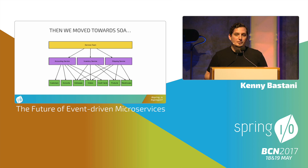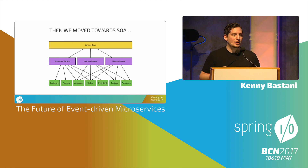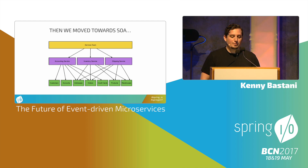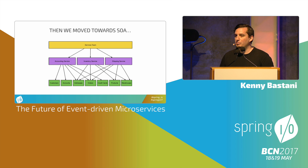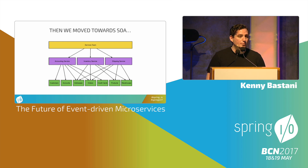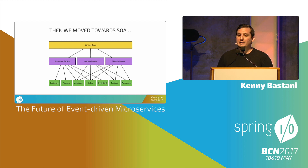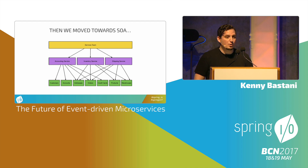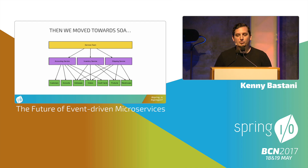Then we moved towards SOA and got a little better. We split out the deployment pipeline to three separate components: an accounting service, an inventory service, and a shipping service — each releasable independently. But the key problem is that now we're sharing libraries. At the bottom, I have my domain language — the objects these services exchange to implement features. If I change the address object, now I have a coordinated release of three separate components, and if something goes wrong in production, I have to roll back as well.